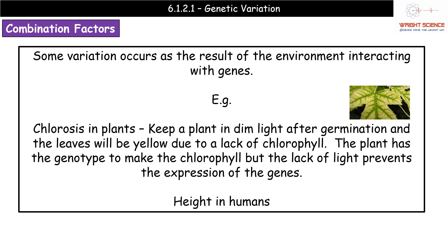The final category involves traits influenced by both genetic and environmental factors interacting with genes. A familiar GCSE example is height in humans: if your family are tall, you have a genetic predisposition to be tall too. However, if you are not fed a good diet with plenty of protein when young, you won't reach that maximum height. So genetics provides the potential from the family, while diet and environment determine how fully that potential is expressed.